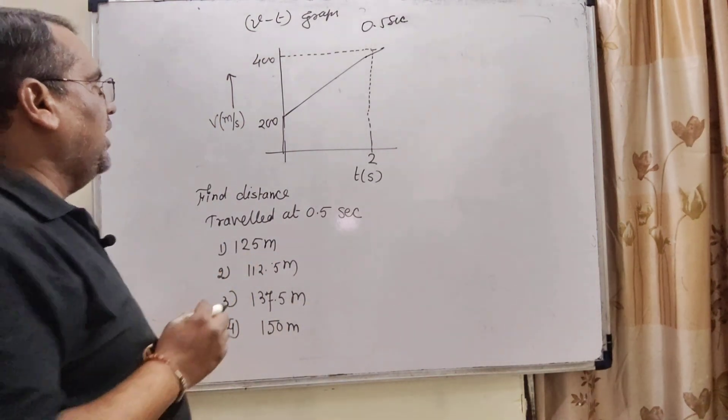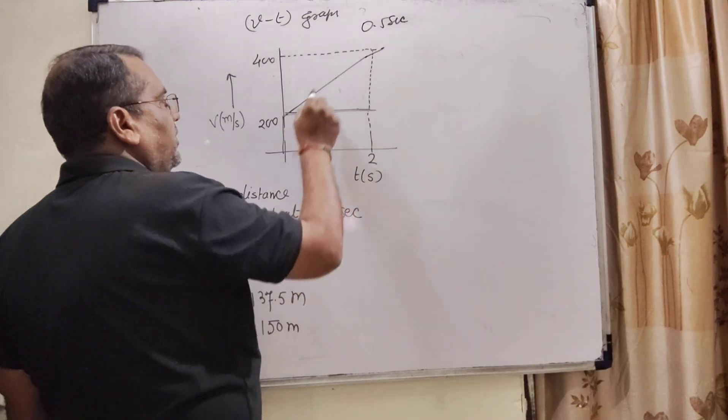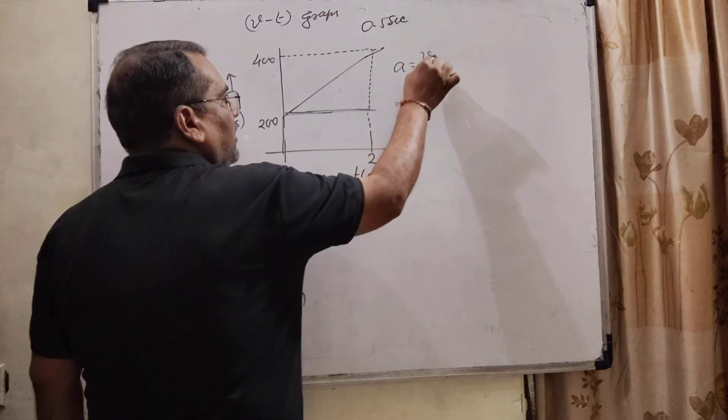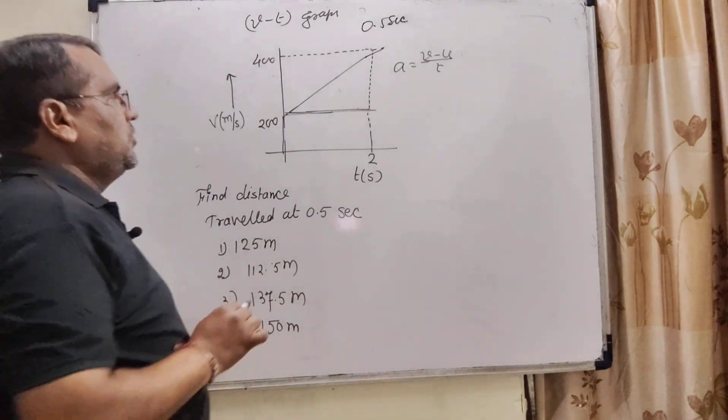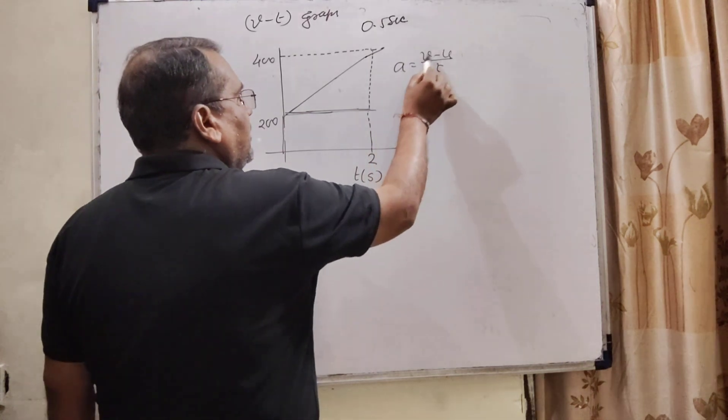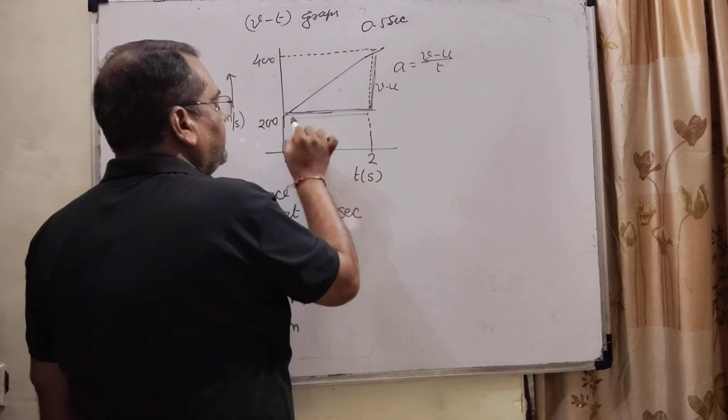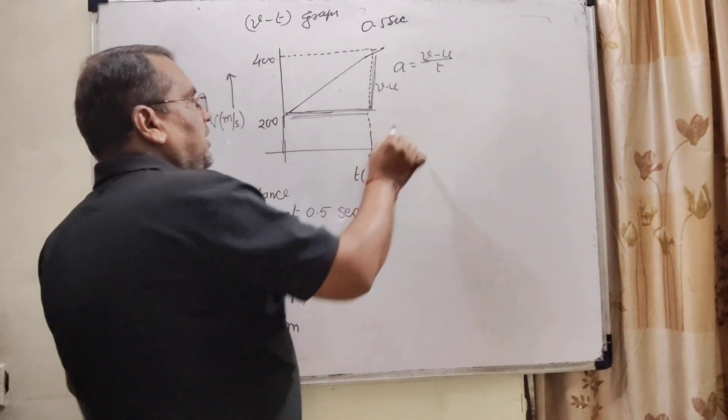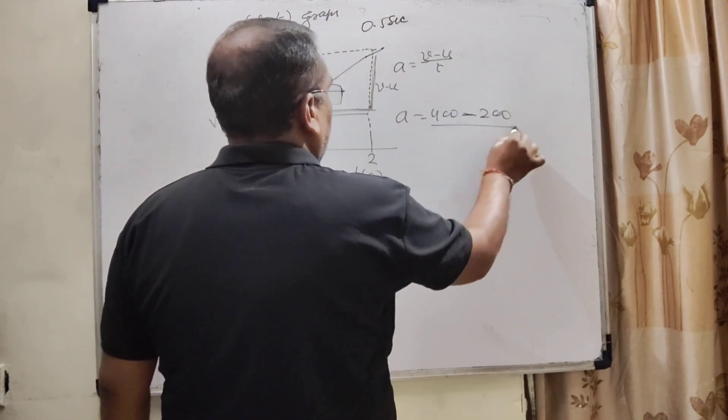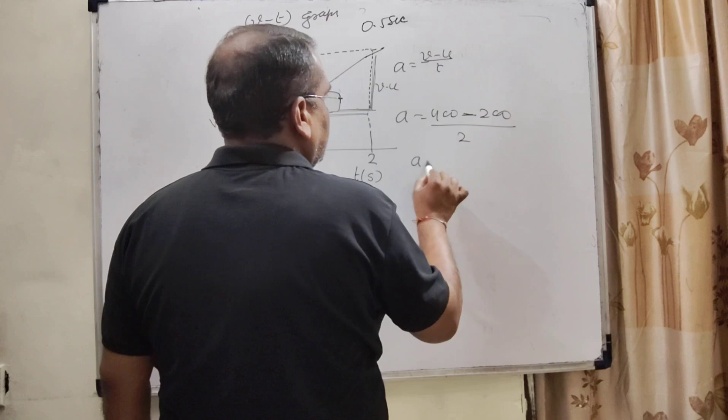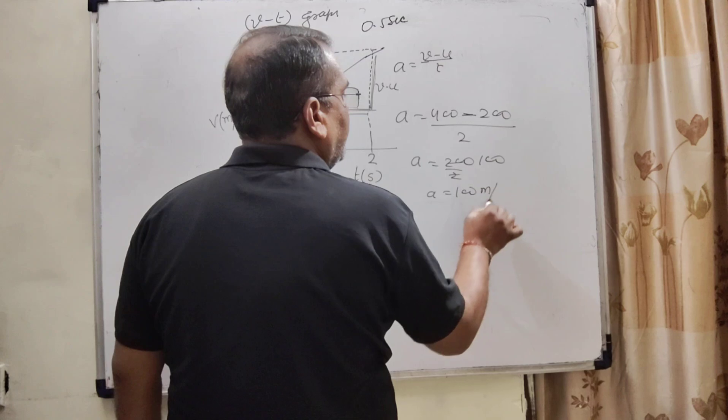So here, let us first calculate the acceleration. As we know that acceleration, that means the slope, V by T, or V minus U by T. Because here, initial velocity is not 0. So here, acceleration a is equal to V minus U by T. This is V minus U, and this is time, that is 2 second. So here, 200 divided by 2, 100 meter per second square.